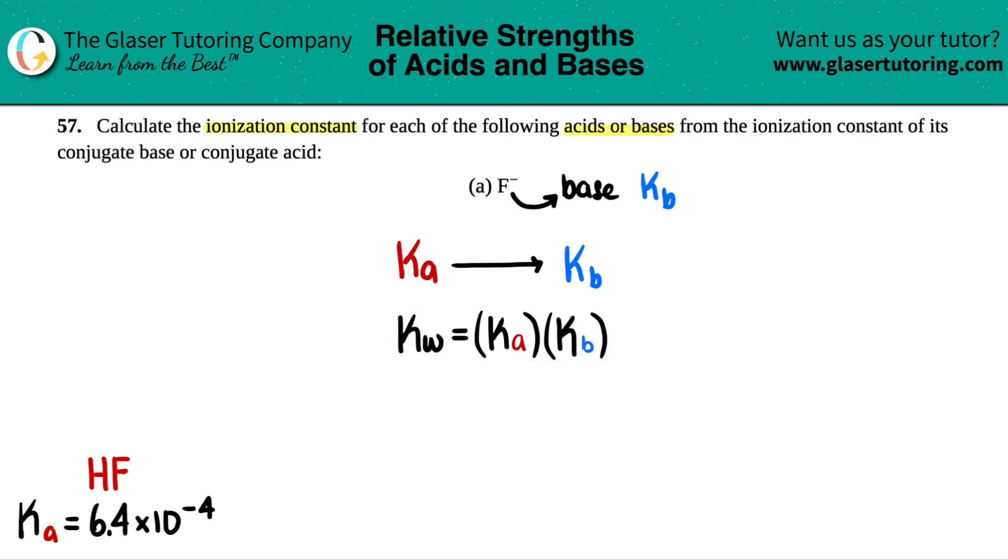Now just know that Kw should be a constant value, especially since we're pulling out KAs from the back of a textbook. This is at 25 degrees Celsius, so you're probably going to have to memorize the Kw, which is 1.0 times 10 to the negative fourteenth, or 1 times 10 to the negative fourteenth, or 10 to the negative fourteenth.